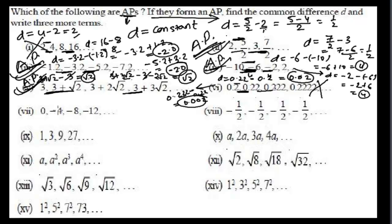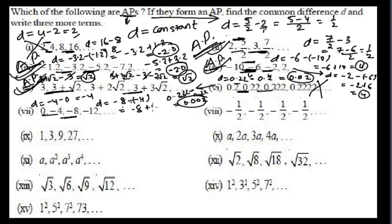For the next sequence, the common difference A2 minus A1 is -4. Checking the next pair: -8 minus (-4) equals -8 plus 4 equals -4. Here also we get -4. Since the common difference is -4 throughout, this is an arithmetic progression.